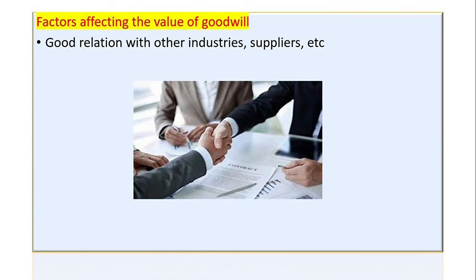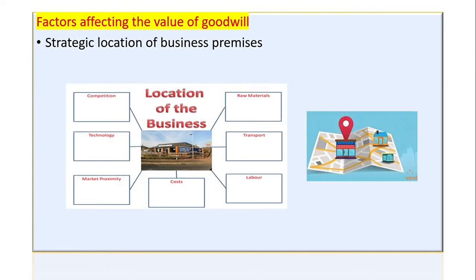Good relations with other industries and suppliers is also very important. You need to maintain relationships with suppliers and support other industries. This helps you get more information, reduce competition issues, and maintain a lot of business. Location is another very important factor. If you want to make a company like a city or a factory, the location plays an important role in accessibility and business operations.